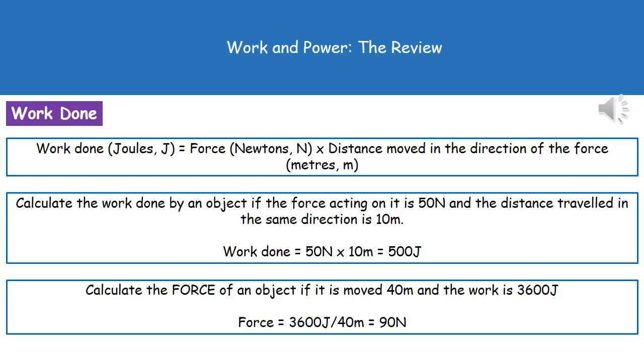A slightly more complex one is where we'd have to rearrange our equation. The simplest way we can do that is by putting it into one of our triangles. If we've got a second example question: calculate the force of an object if it's moved 40 metres and the work is 3600 joules. Using our triangle, we know that our force is the work done divided by the distance. So in this case 3600 joules divided by 40 metres, which gives us our answer of 90 Newtons.